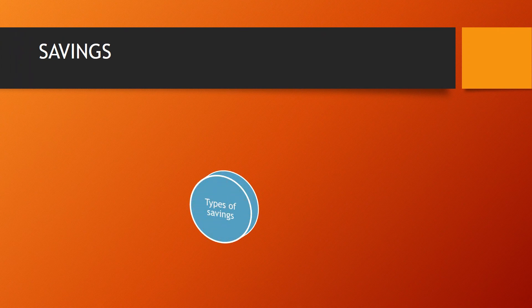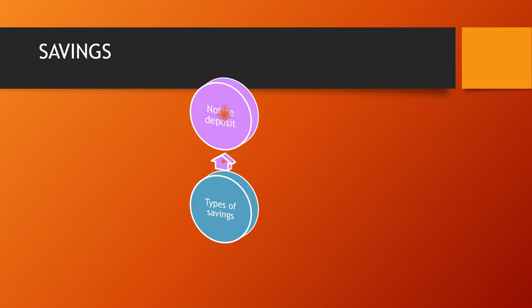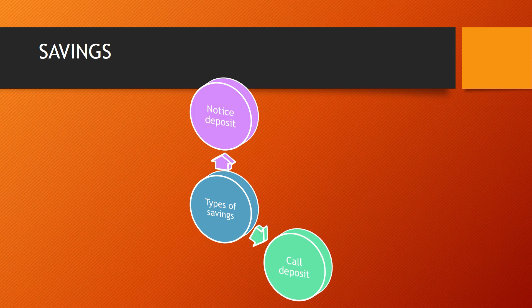Savings is money that is put away for something that may be needed in the future. Saving is important because it helps us to plan better for the future. There are three types of saving accounts. The first is a notice deposit — you earn interest and your money is available after you have given the required period of notice. The second is a call deposit — you earn interest and your money is available whenever you need it. The third is a fixed period account — an amount of money is invested for a fixed period at a fixed interest rate.